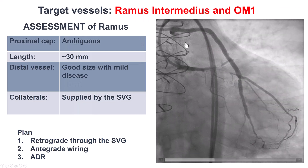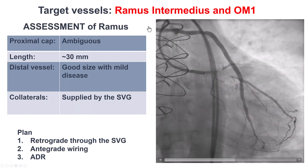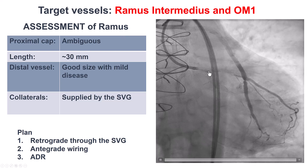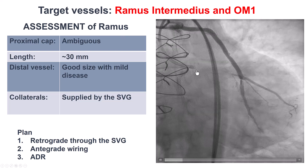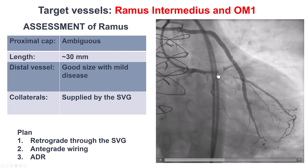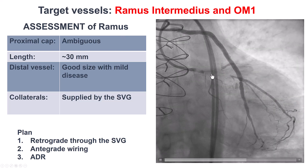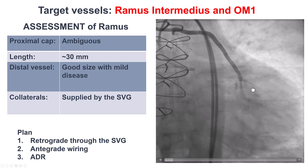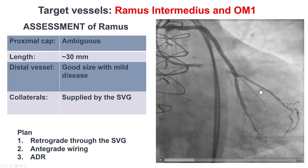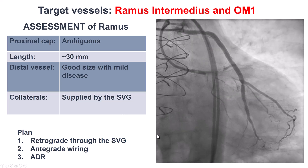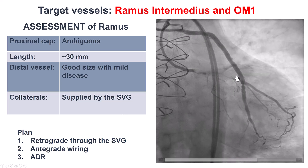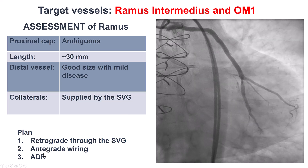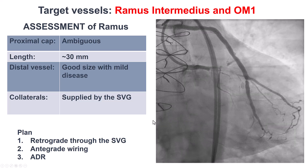Regarding the anatomy of the RAMUS CTO: ambiguous proximal cap with a little entry point, but unclear where this is going. Previous stent length is about 30 mm. Distal vessel is good size and fills from the vein graft. The plan for this was to go retrograde through the SVG, and if that didn't work, go antegrade or use ADR.